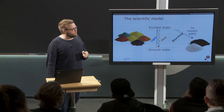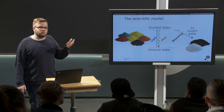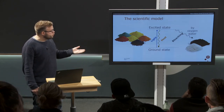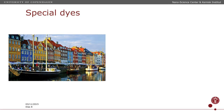So now we have a scientific model for all the processes that occur in most normal dyes. Here's a picture of Copenhagen where we have a series of beautiful colored houses. Most dyes have just one function — that is to make our life interesting. Those dyes absorb light, generating color for our eyes, and they slowly fade.